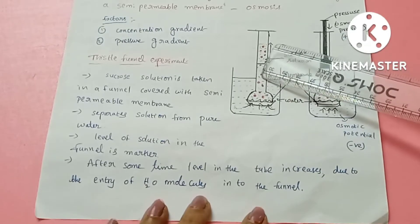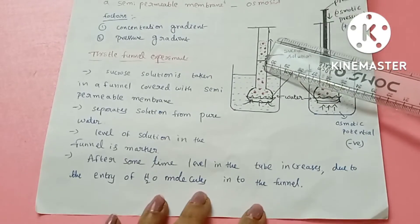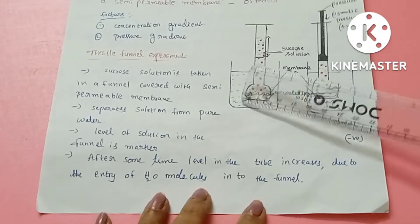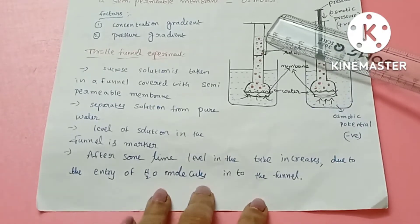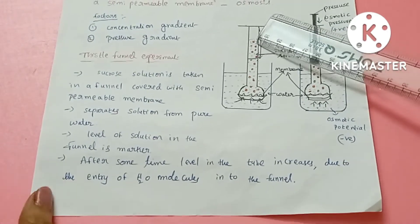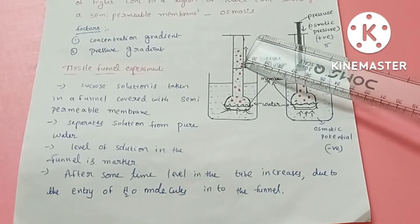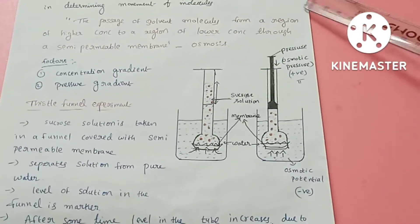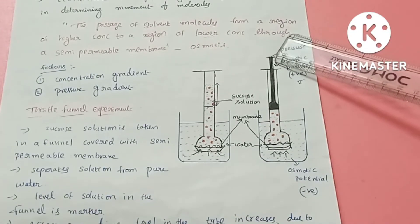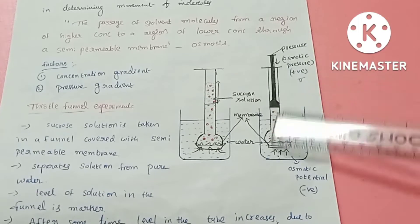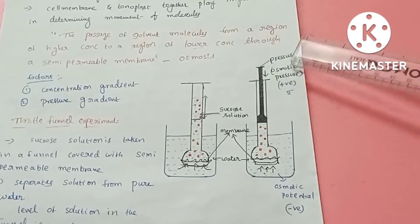When the sucrose solution concentration is high, water molecules from the beaker enter the funnel through the semi-permeable membrane, causing the sucrose solution level in the funnel to rise. To prevent the entry of water molecules, we apply pressure on the funnel. The pressure required to stop water molecules from entering is called osmotic pressure.